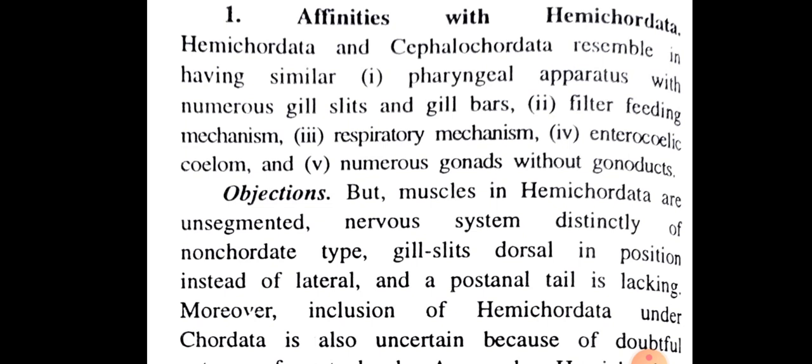Objections: But muscles in Hemichordata are unsegmented; the nervous system is distinctly of non-chordate type; gills are dorsal in position instead of lateral; and a post-anal tail is lacking.